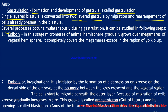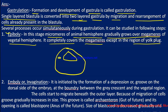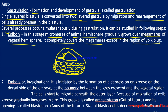In the first stage — epiboly — micromeres of the animal hemisphere gradually grow over the megameres of the vegetal hemisphere. The micromeres completely cover the megameres except in the region of the yolk plug. You can see in the diagram: there are micromeres, the blastocoel, and the megameres. A small area — the yolk plug — remains uncovered.